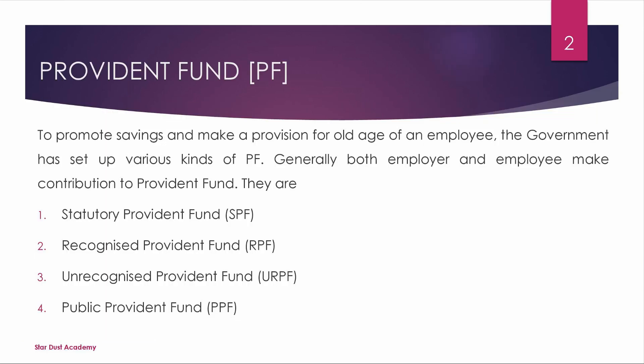This is Provident Fund. To promote savings and make a provision for old age of an employee, the government has set up various kinds of Provident Funds. Provident Funds are going to increase the savings mentality. Normally, employers are going to contribute to the Provident Funds. Now let's look at the types: first is Statutory Provident Fund (SPF), second is Recognized Provident Fund (RPF), third is Unrecognized Provident Fund (URPF), and the last is Public Provident Fund (PPF).